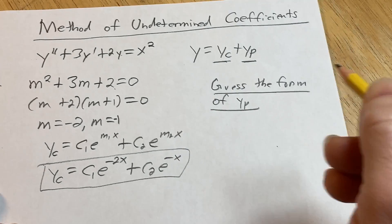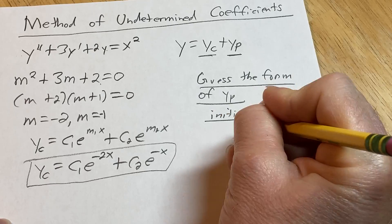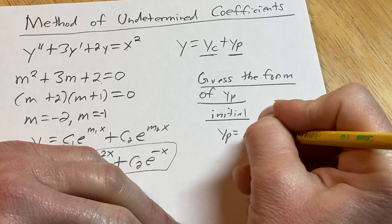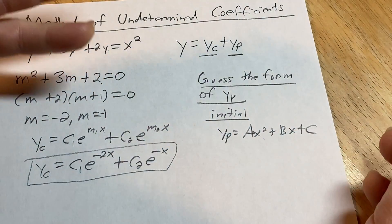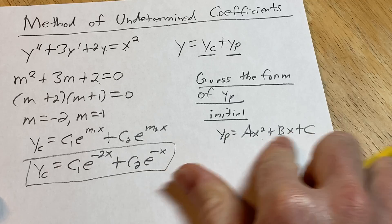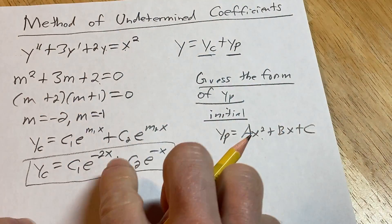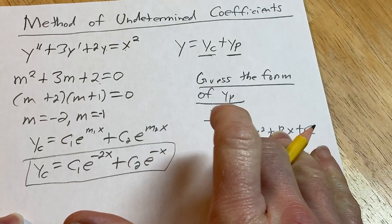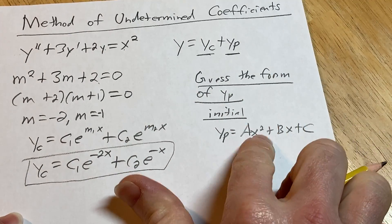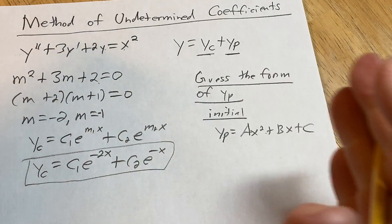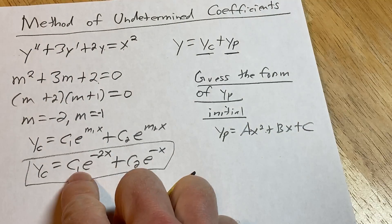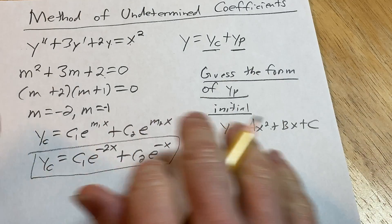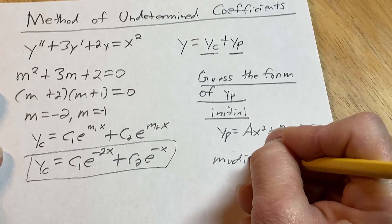To find y sub p, we make an educated guess about its form. You look at the right-hand side — it's a quadratic — so the general form of a quadratic is y sub p equals ax squared plus bx plus c. Then you compare each term of the complementary function to your initial guess and check for repetition. These are exponentials and this is a quadratic — they're clearly linearly independent. There's no repetition, so no modification needed.